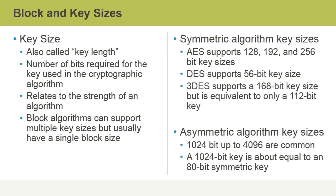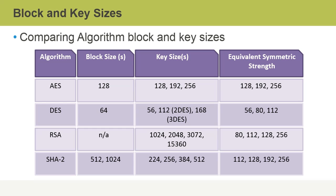For asymmetric algorithms, the key sizes will vary. For example, we might have a 1024-bit key up to a 4096-bit key. A 1024-bit key is about the equivalence of an 80-bit symmetric key.